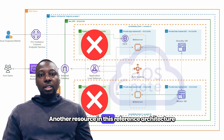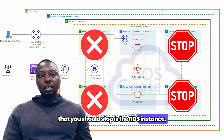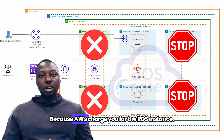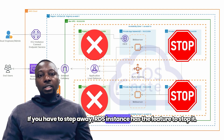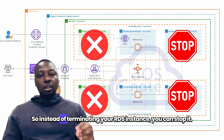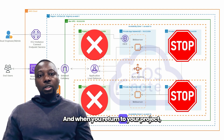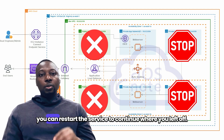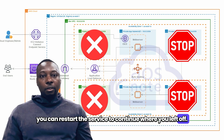Another resource in this reference architecture that you should stop is the RDS instance, because AWS charges you for it. If you have to step away, the RDS instance has a stop feature, so instead of terminating it, you can stop it. When you return to your project, you can restart the service and continue where you left off.